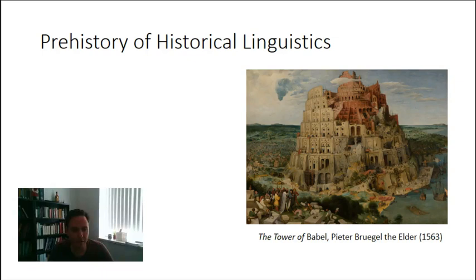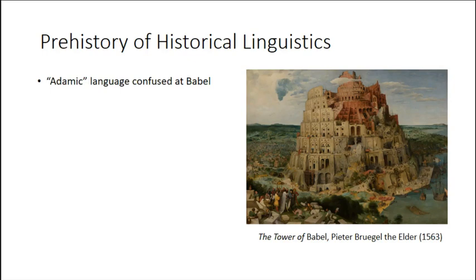In Europe, the original language — the source of all languages — was the so-called Adamic language, the language of Adam. It was believed this was the language spoken by all human beings, one language, until in Genesis that language gets confused at Babel. This is how God punishes humans for their overweening pride — Nimrod the mighty hunter and all that — and disperses all of the peoples into different language groups.